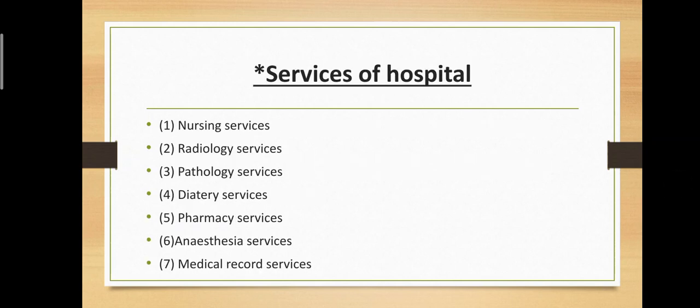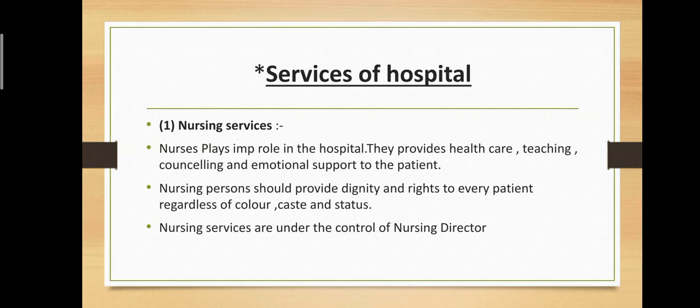Under supportive services there are seven types: nursing services, radiology services, pathology services, dietary services, pharmacy services, anesthesia services, and medical record services. Nursing services: nurses play an important role in the hospital; they provide health care, teaching, counseling, and emotional support to the patient. Nursing persons should provide dignity and rights to every patient regardless of color, caste, and status. Nursing services are under the control of the nursing director.